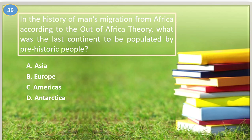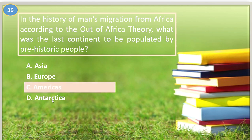Number thirty-six. In the history of man's migration from Africa, according to the out-of-Africa theory, what was the last continent to be populated by prehistoric people? A. Asia, B. Europe, C. Americas, D. Antarctica. The answer is Americas.